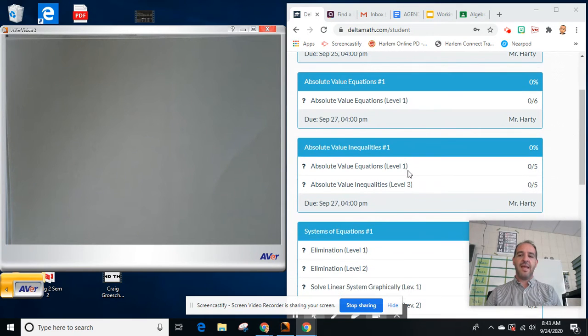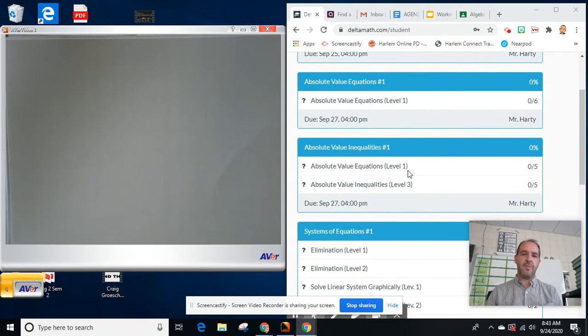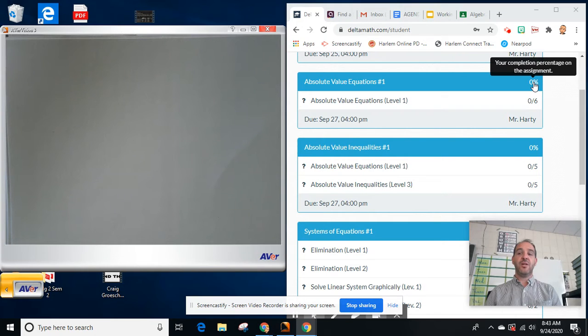I want to start here with these and explain a little bit better maybe than I have before how DeltaMath scores things. When you see the percentage here, that's your completion percentage on the assignment. It doesn't mean if it says 100 you've got 100, it means you're 100% done. And here I haven't even started yet, so I need to start on this. But what this is telling me right here is this is the number of problems I need to complete correctly before I get this to 100. So let's go ahead and do this.